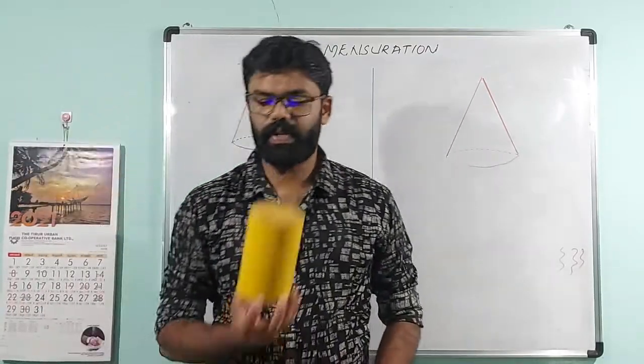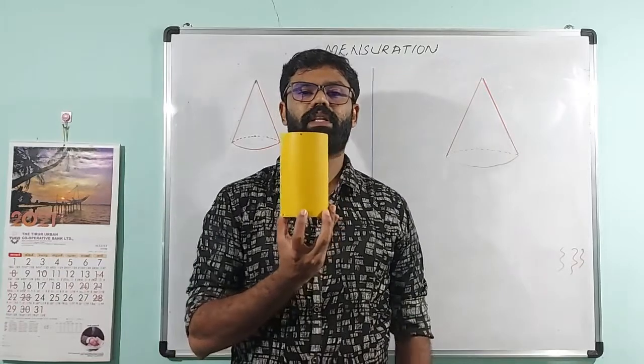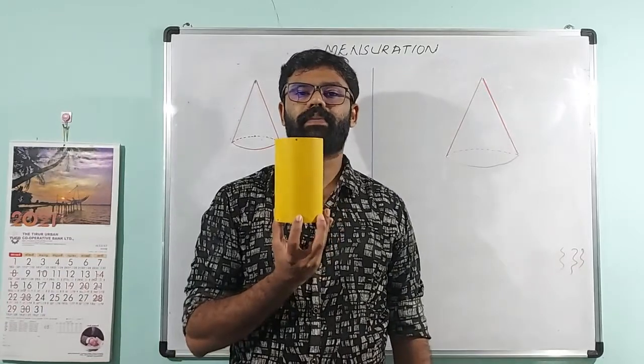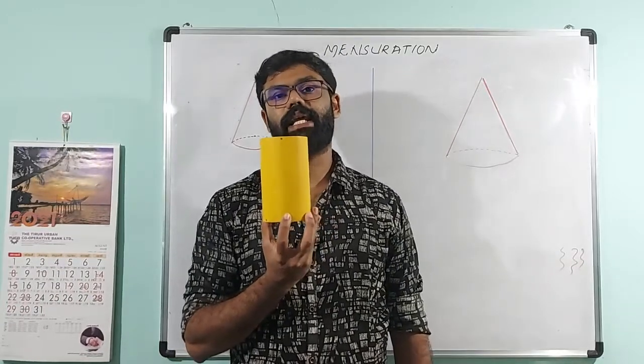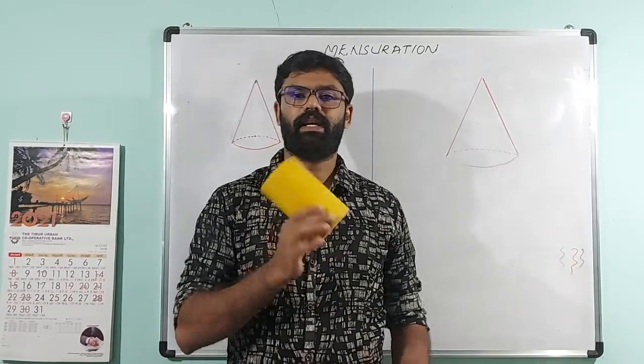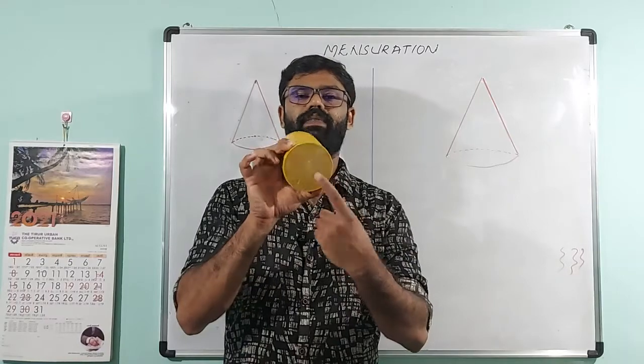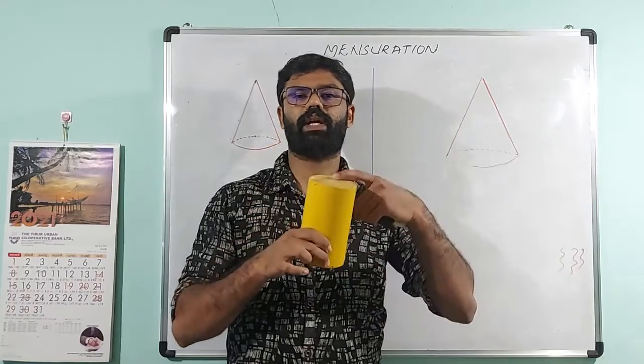Now there are some figures. This is the circular prism — a cylinder. The end faces are circular in shape.